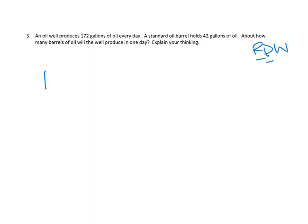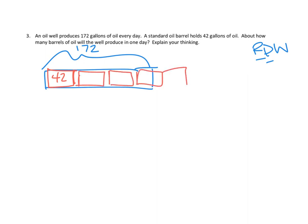We've got an amount of oil that is 172 gallons. That's how much the oil well produces. And then we're told that a barrel holds 42 gallons. And then the question is basically, how many of these barrels are there? One, two, three, maybe four, maybe five. How many barrels fit in there? That's our question. How many barrels? This looks like a division problem. We're going to divide 172 divided by 42.